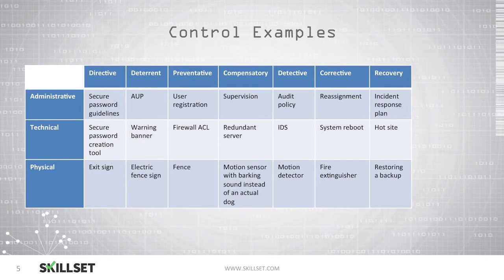This slide provides control examples that fall within the different categories and types. One example of a deterrent administrative control is an acceptable use policy (AUP), which informs employees what they are and are not permitted to do on your system. An example of a preventative technical control is a firewall ACL, or access control list.